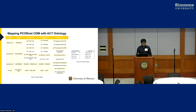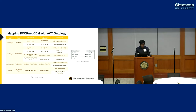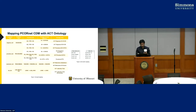This is how we mapped our PCORNet CDM with ACT ontology. We created several fact tables: diagnosis fact, procedure fact, medication fact, and lab fact. For each table we have a source PCORNet table — diagnosis, procedures, prescribing, and lab results. This is how we constructed concept codes for each fact table. For example, for diagnosis we used the DX type and DX columns and mapped them with corresponding ontologies. For lab results, we mapped lab LOINC with concept CD, result modifier, result number, and result unit with corresponding lab fact columns.